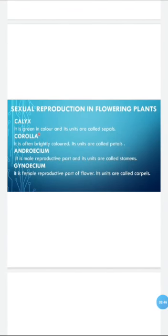Now we will discuss the calyx. It is green in color and forms the outermost whorl. Its units are called sepals. The second outer whorl is the corolla, which is often brightly colored. Its units are called petals. The plant's petals can be different colors - blue, pink, etc. These attract insects and also play their role. They are basically the corolla.